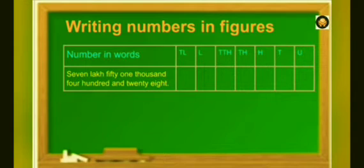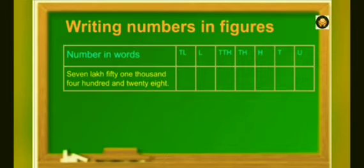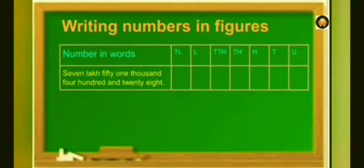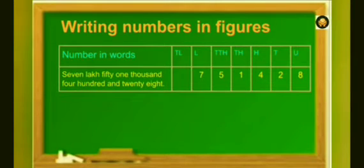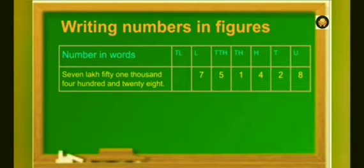Now, let's see how to write numbers in figures. The first number in words is 7,51,428. When writing numbers in figures, write the digit in the highest place first and then in each of the next smaller places. Also, write 0 if there is no digit in that place. In this example, there are 7 lakhs, so write 7 in the lakh place. There are 51,000, so write 5 in the 10,000 place and 1 in the 1,000 place. As there are 400, write 4 in the hundreds place. 28 equals 2 tens and 8 units, so write 2 in the tens place and 8 in the units place.